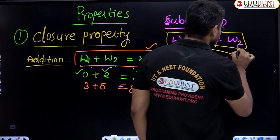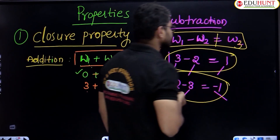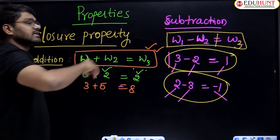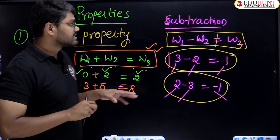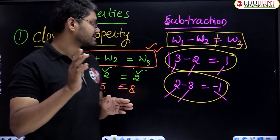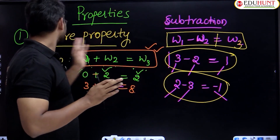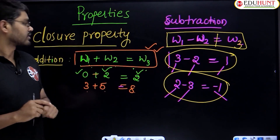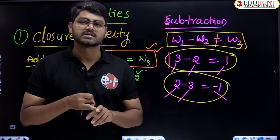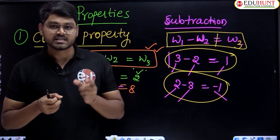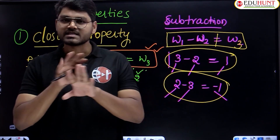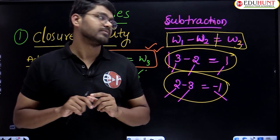In the first condition it was possible, but in the second condition it is not possible. So totally, it will not be possible. We put the not equal to symbol. Under subtraction, whole numbers do not hold closure property.